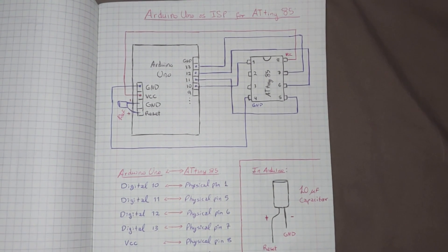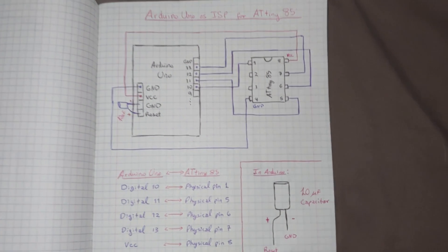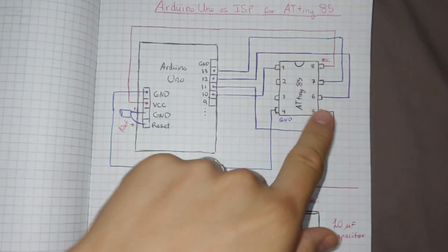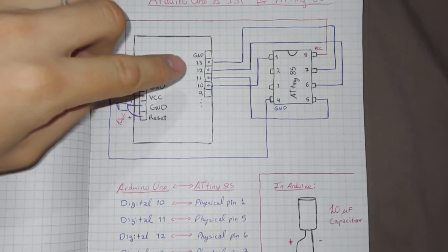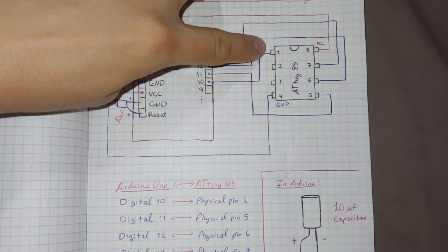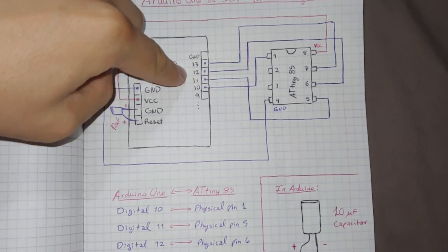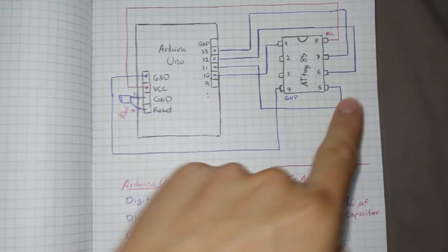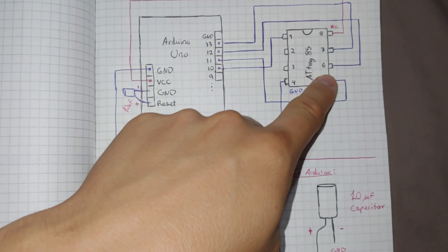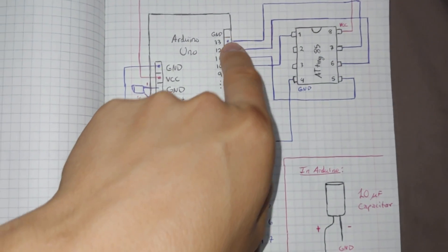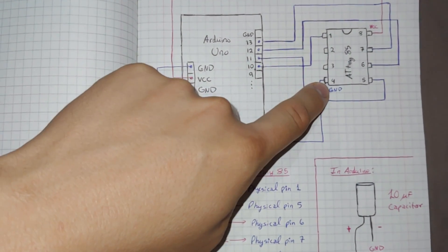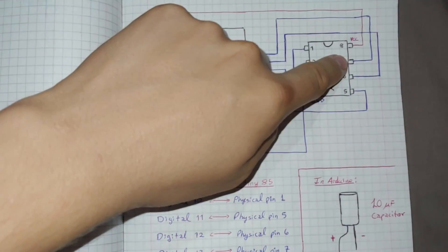This diagram shows you how to wire your Arduino Uno to the ATtiny85, so you can upload the sketches to the ATtiny85. Okay, this is the Arduino Uno, and this is the ATtiny85. You will begin by connecting digital pin 10 in Arduino to physical pin 1 in the ATtiny85, digital pin 11 in Arduino to physical pin 5, digital pin 12 to physical pin 6, digital pin 13 to physical pin 7, ground to the physical pin 4, and VCC to physical pin 8.